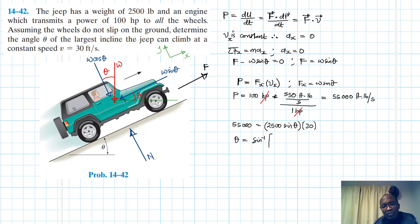Making theta subject to the formula, this becomes sine inverse of 55,000 divided by 2500 by 30. Therefore, theta is just going to be sine inverse of that, and we just get 47.17 degrees. So this is our largest incline the Jeep can climb at this constant rate.